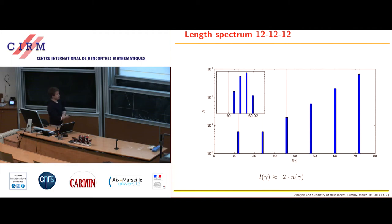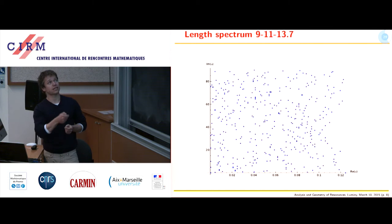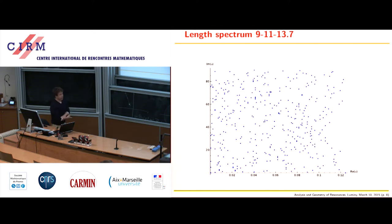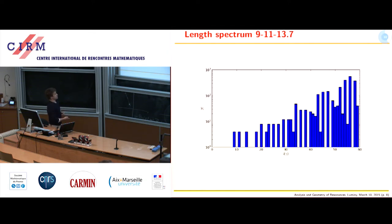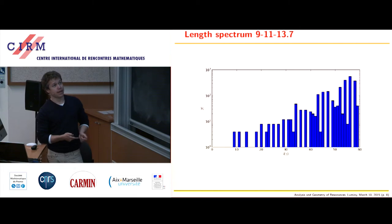What you obtain is an order function n which to very good accuracy satisfies the equality: 12 (some base length) times the order function gives to a very good approximation the length of the geodesic. For the surface where there were no chains at all, if you look at the length spectrum it shows no clusters. With such a length spectrum, you can't choose a good order function, and apparently if you don't have a clustering and can't choose such a good order function, then you won't see any chains either.